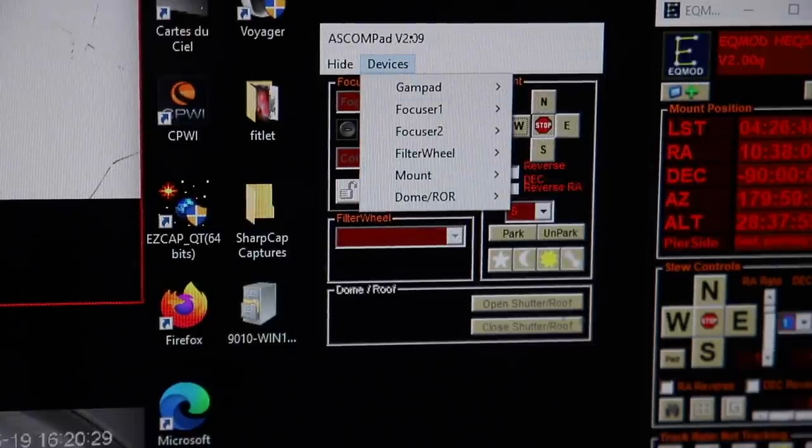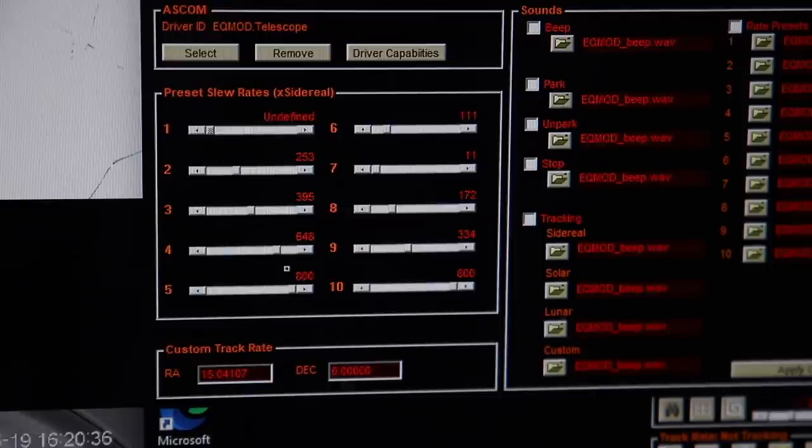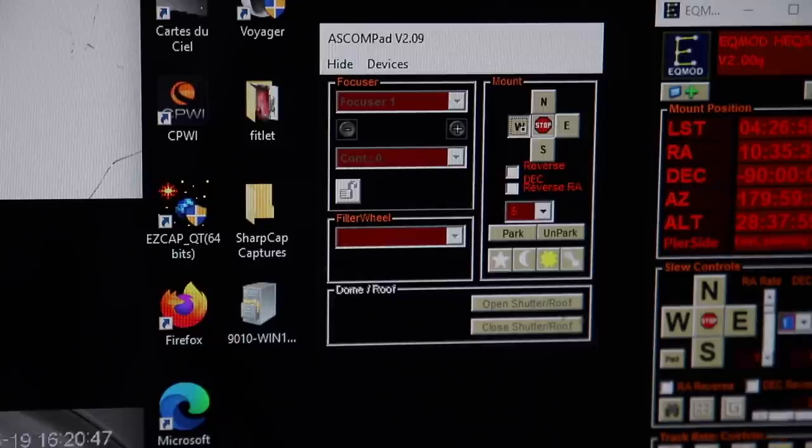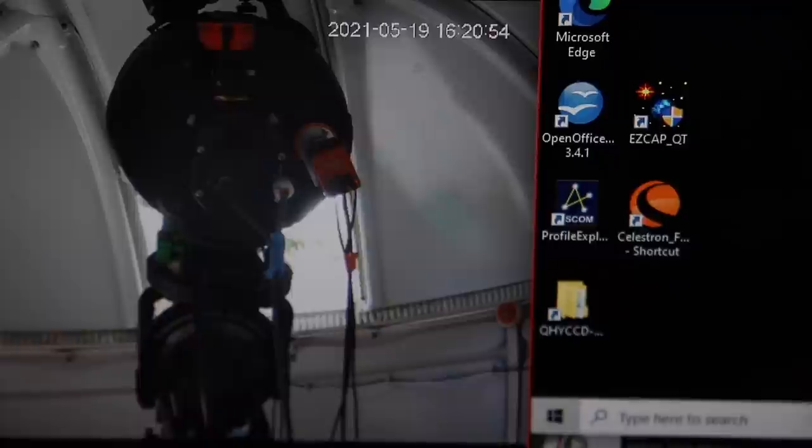Once the mount's connected, you might want to change in the setup here these slew rates, because they all default to like nothing basically. So you can set up a gradient of slew rates here. I've done them from 1 to 5, and then if I hit these buttons, I can see the mount moving, which is a good start.